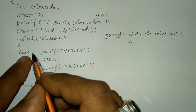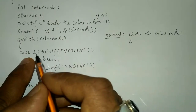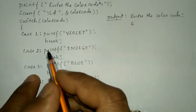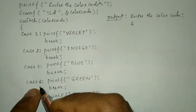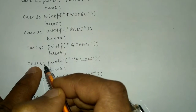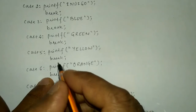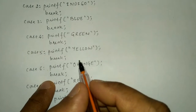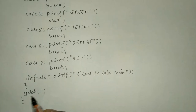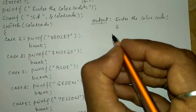The switch statement matches color code six against each case label. Case one is not equal to six, so it won't execute. Six is not equal to two, three, four, or five either. Now six is equal to six, so it is going to print 'orange', then break out — meaning the control comes out of the switch statement and executes the next statement. The program terminates and prints orange.